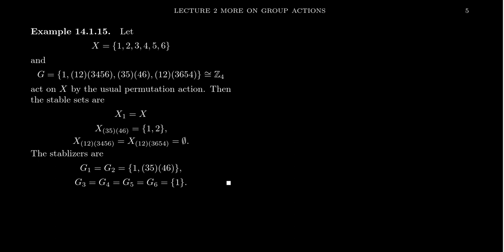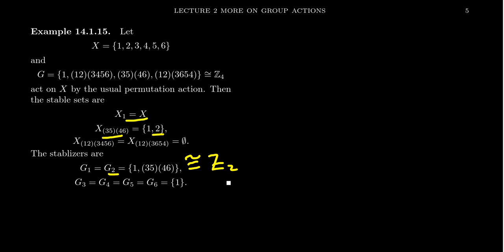Now let's go the other way — what are the stabilizers, those isotropy subgroups? What is the subgroup that fixes the letter 1? The identity fixes everything, so it belongs. And as we observed, (3 5)(4 6) also fixes 1. So the stabilizer of letter 1 is the cyclic subgroup generated by (3 5)(4 6), which is isomorphic to Z2. The stabilizer of letter 2 is the same thing. For the other letters 3, 4, 5, 6, only the identity permutation stabilizes them, so their stabilizers are just the trivial subgroup.